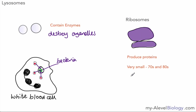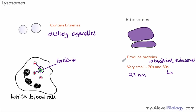Ribosomes help produce proteins. They're very small — usually around 25 nanometers (25 billionths of a meter). There are two kinds: the 70S type, found in bacterial cells, and the 80S type, found in eukaryotic animal cells. That's a quick overview of the different organelles. Unfortunately, much of this is memory work — you need to remember what these structures are and what they do. Go over this video again or review your notes to make sure you've got it. Thanks for watching and see you soon.